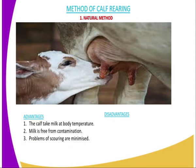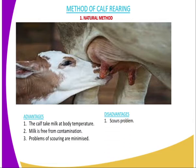Number three, the problem of scouring is minimized. That is, excess intake of milk is minimized because the calf is allowed to suck immediately after the milking has already been done.